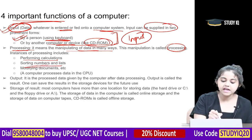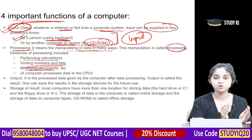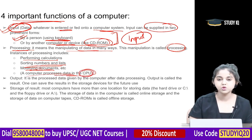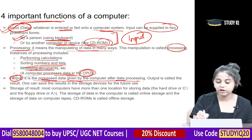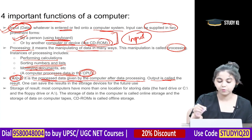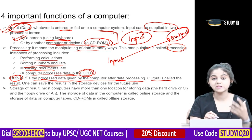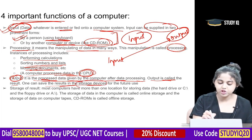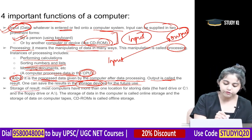Instances of processing include performing calculations, sorting numbers and lists, and modifying documents. A computer processes data through the CPU. The third function is output — the processed data given by the computer after data processing is called the result. One can save the result in storage devices for future use.